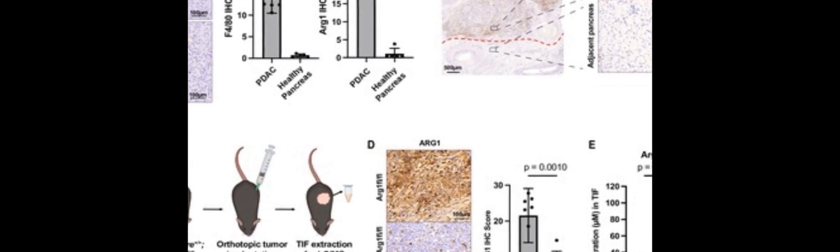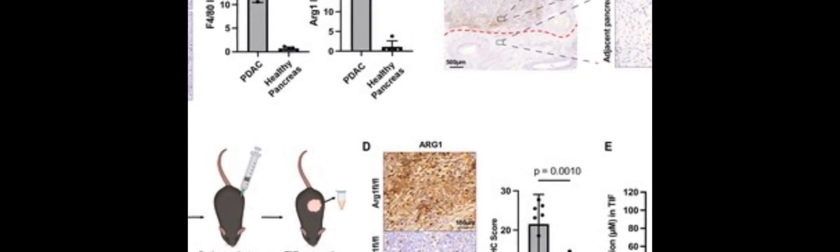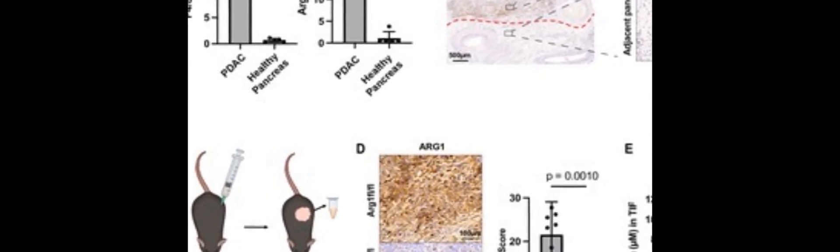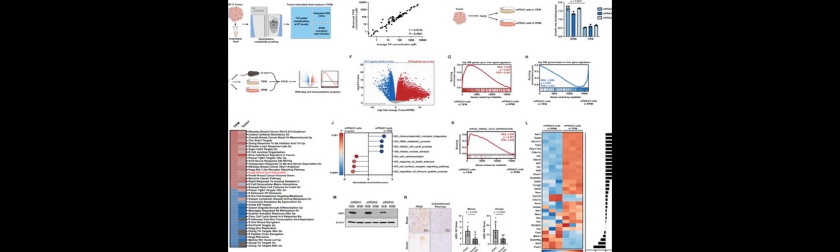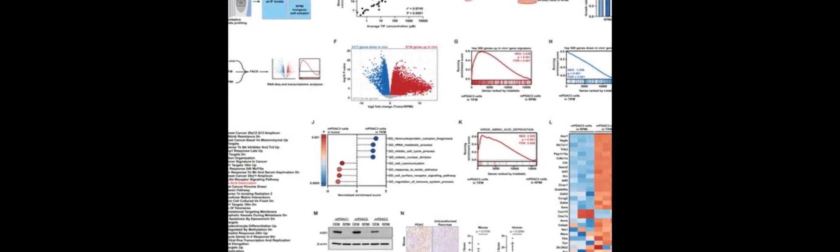To better understand the role of nutrient availability in cancer, researchers developed a cell culture system called Tumor Interstitial Fluid Medium, TIFM. This system mimics the nutrient environment of tumors, allowing researchers to study the metabolism of cancer cells under more realistic conditions.